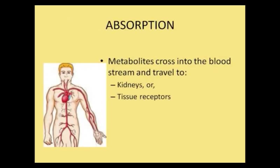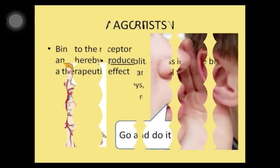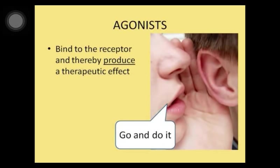Absorption. Metabolites enter the bloodstream and travel to the kidney and then are eliminated, or some go to the tissue receptor, where treatment begins. Receptors are structures on cells that tell cells to do something, such as make a hormone.